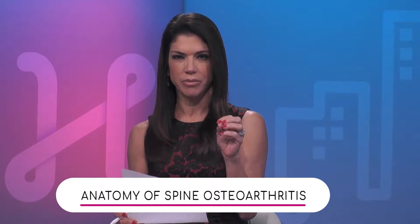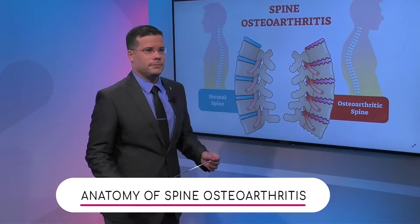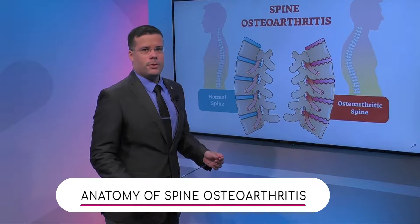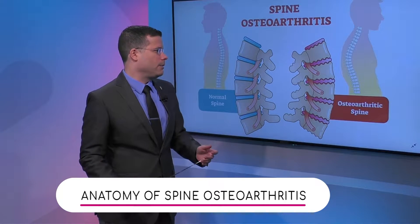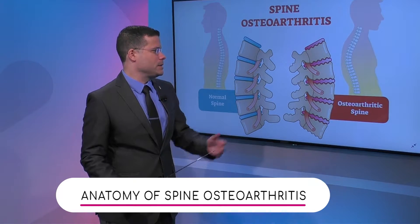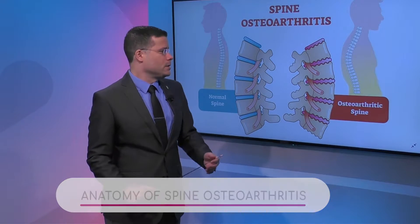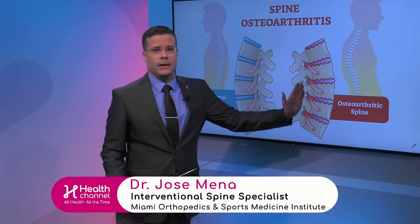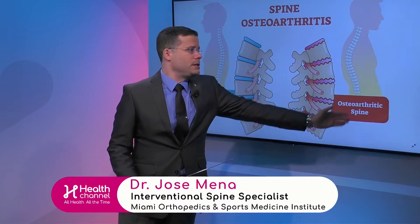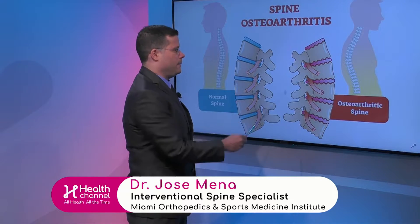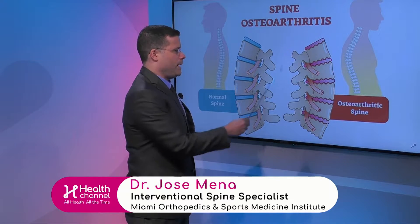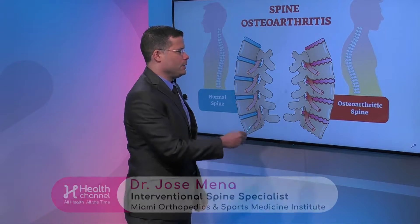Right now, doctor, we're looking at spine osteoarthritis. That's correct. Can you tell us what that is? So basically here we have the spine — what I'm seeing is the spine looking from the side view here, so basically the belly will be sitting over here and the back portion, the back muscles, will be down here at the skin.